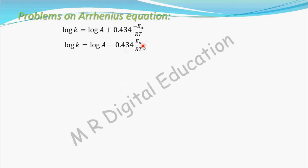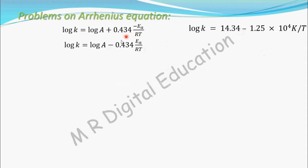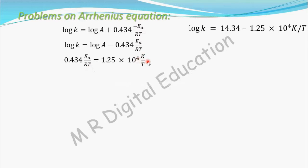Now compare this with the given equation: log K = 14.34 − 1.25 × 10⁴ K/T. Matching log K with log K and 1/T with 1/T, the constant log A = 14.34, and the coefficient term gives us: 0.434 × Ea/RT = 1.25 × 10⁴ K/T. Cancel T from both sides.